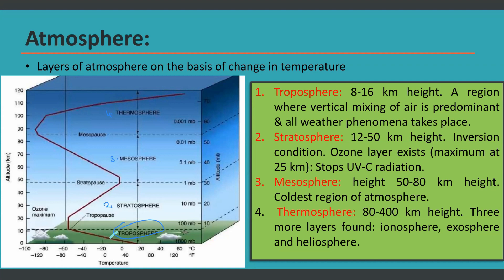Starting from the ground surface and moving upward, at about 10 to 12 kilometers height, the troposphere ends. Whenever any particular layer is ending, that boundary is called a pause. The pause of the troposphere is called the tropopause.